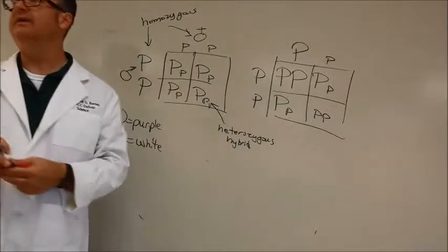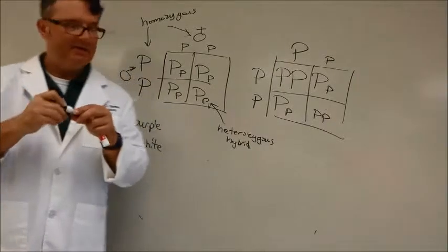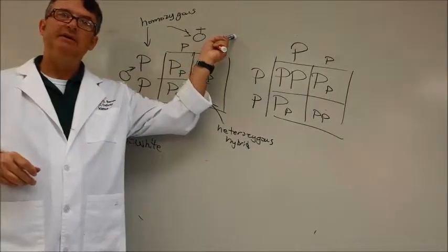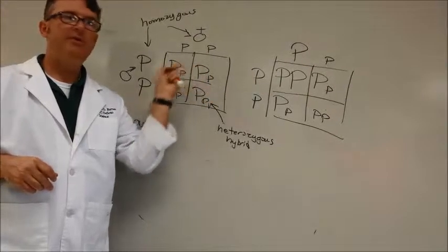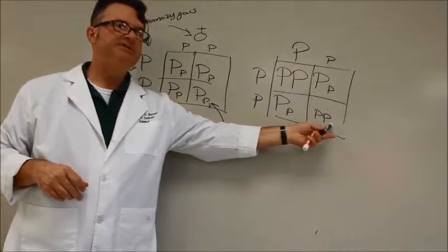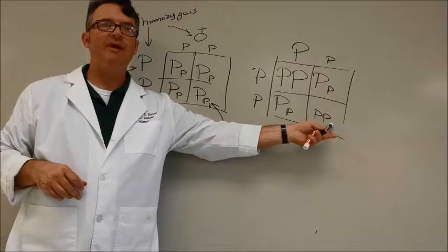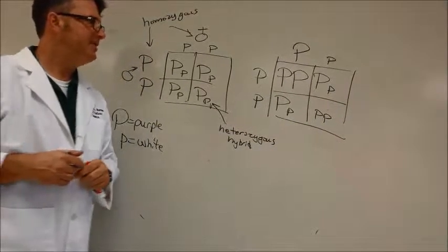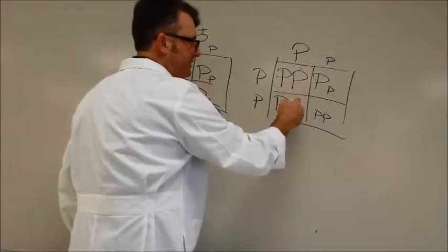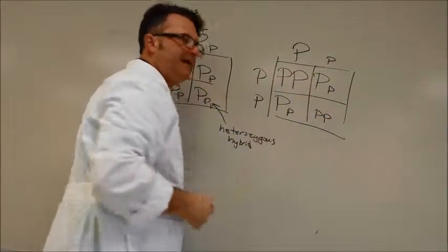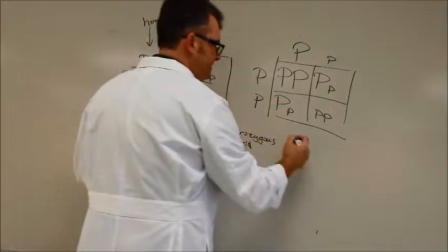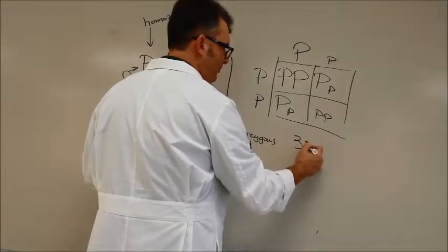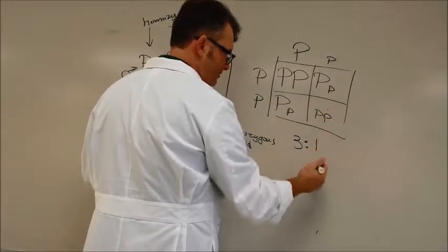So now here is one of the interesting things. The grandmother was a white flower. Her children, there were no white flowers. But look, skipping generations, once again, that white flower appears. So out of these four possibilities, how many of them came out to be purple? Three. Seventy-five percent or three out of four. And there was only one that was white.